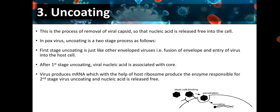Next is uncoating — the process of removal of the viral capsid so that nucleic acid is released free into the cell. In poxvirus, uncoating is a two-stage process. The first stage is like other enveloped viruses: fusion of the envelope and entry into the host cell. After the first stage, viral nucleic acid is still associated with the core. The virus produces messenger RNA which, with the help of host ribosomes, produces the enzyme responsible for the second stage of uncoating, releasing nucleic acid free.